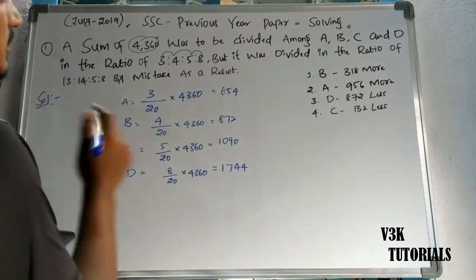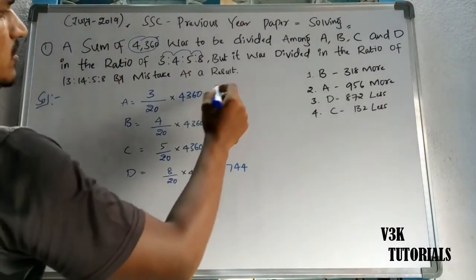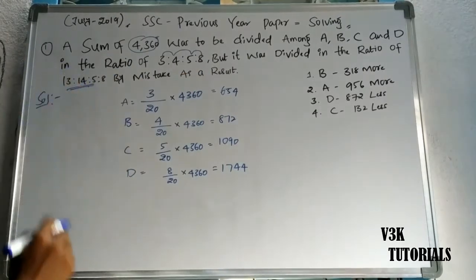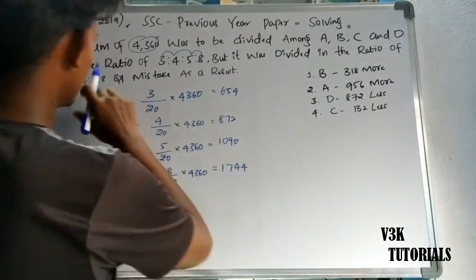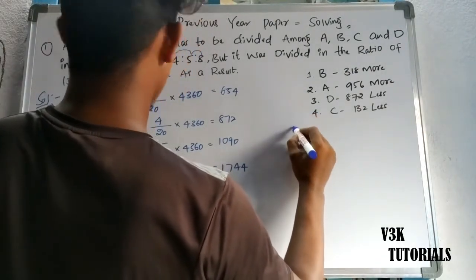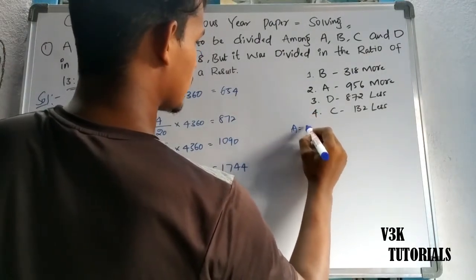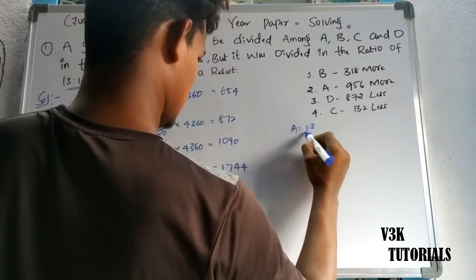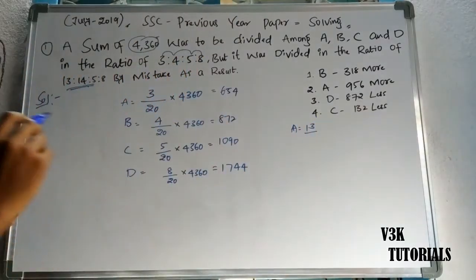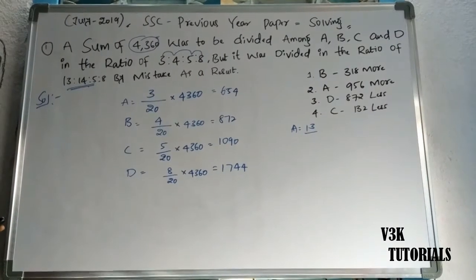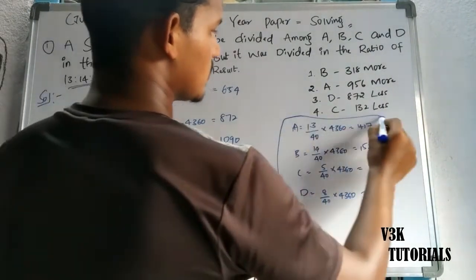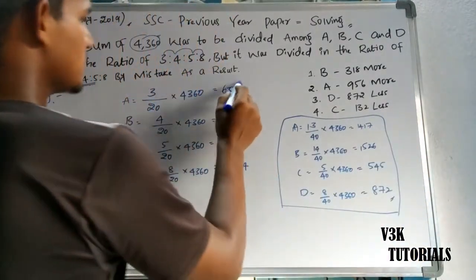We have to do this ratio now. If you make a mistake, the total is divided by the mistake ratio 13:14:5:8.